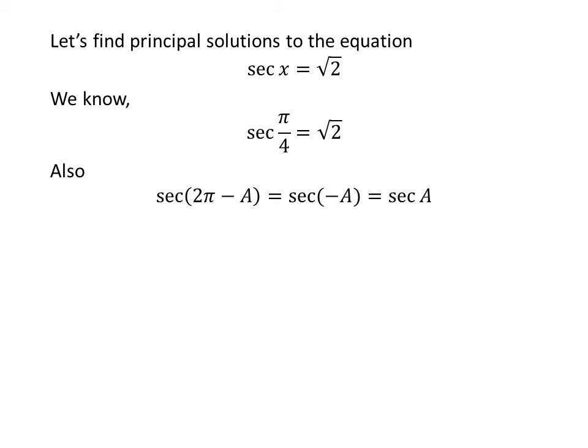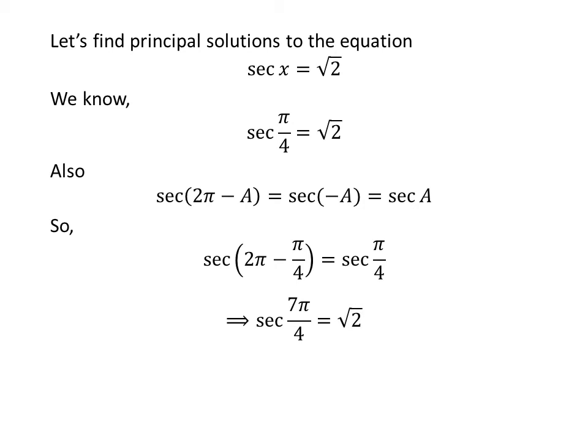The proof of this trigonometric identity is given in the video appearing in the upper right corner, and the link is also given in the description section. Applying the above identity, secant of 2π minus π/4 equals square root of 2. Since 2π minus π/4 equals 7π/4, we have secant of 7π/4 is equal to square root of 2.